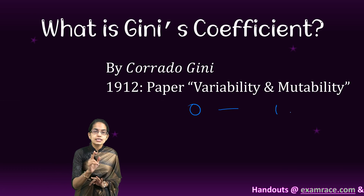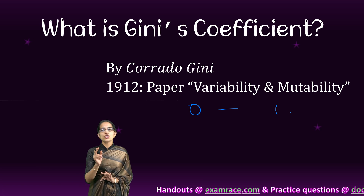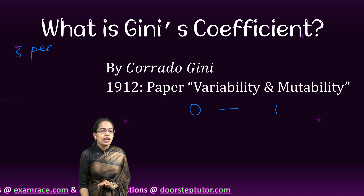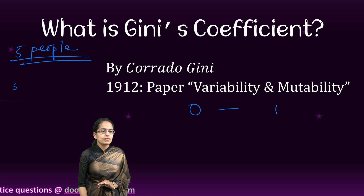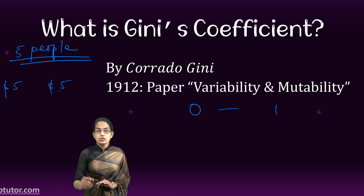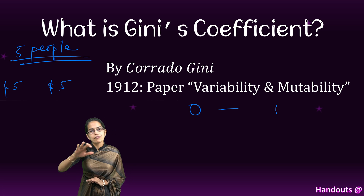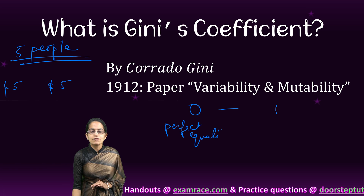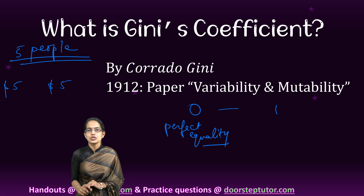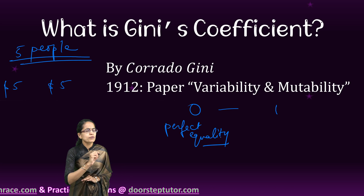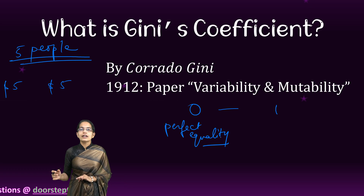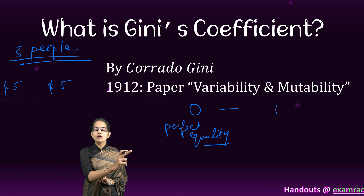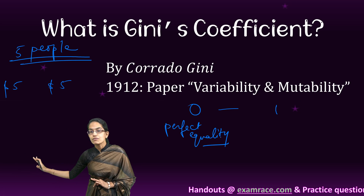The Gini coefficient would be within the range of 0 to 1. That means if there are 5 people and each of these 5 people have 5 dollars in hand, the wealth is perfectly distributed — that is perfect equality — and the Gini coefficient would turn out to be 0. But what if there are 5 people and all 25 dollars are concentrated with only one person and the others have none?